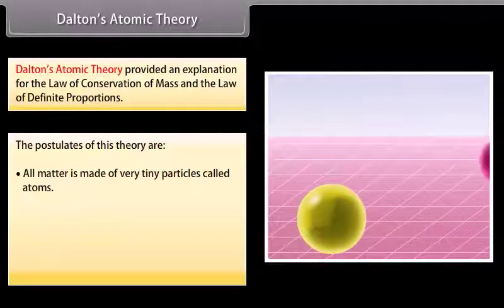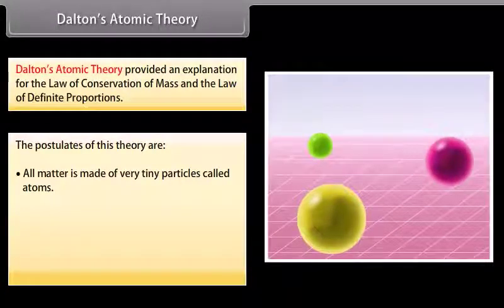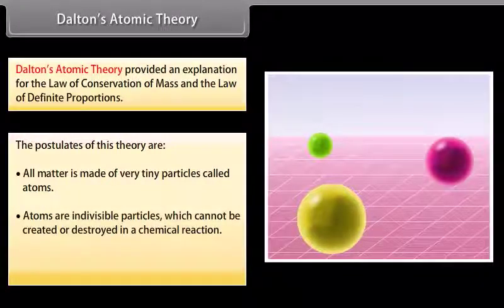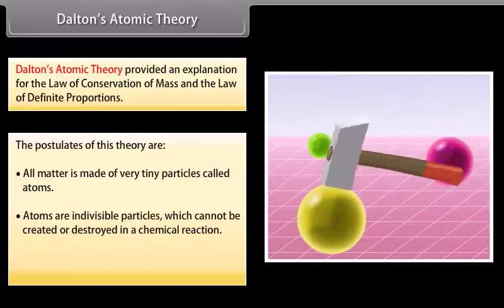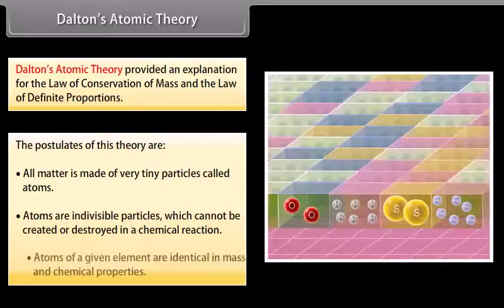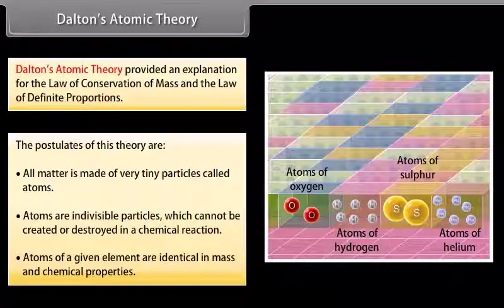1. All matter is made of very tiny particles called atoms. 2. Atoms are indivisible particles which cannot be created or destroyed in a chemical reaction. 3. Atoms of a given element are identical in mass and chemical properties.